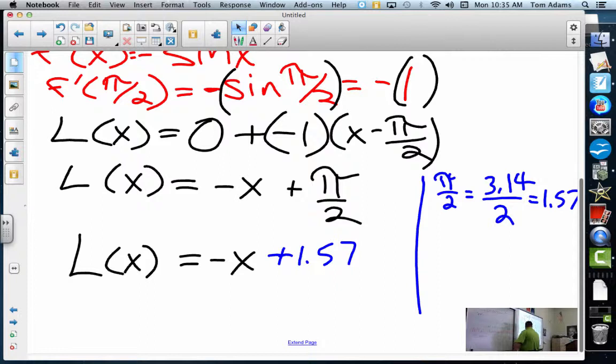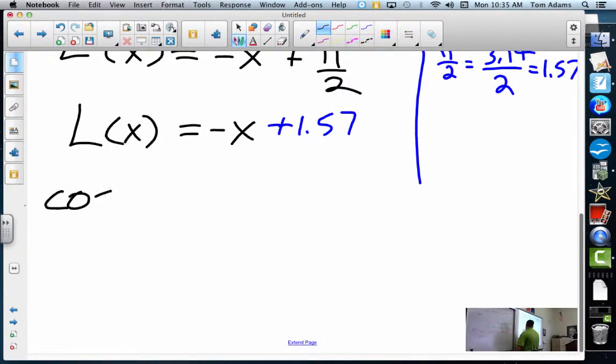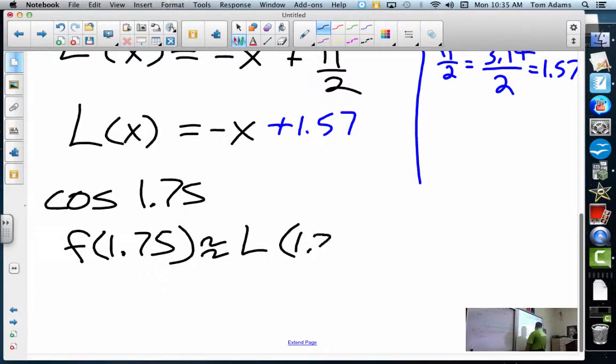Well, what did we want to know? What was cosine of 1.75? So what we really wanted to know was f(1.75), but that was complicated. So we're going to approximate that as L(1.75), which is easy because L(1.75) is really -1.75 + 1.57. Can we do this without a calculator? I don't know. Yes, we can.